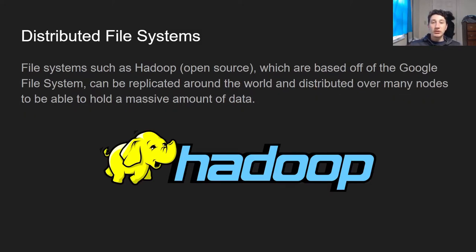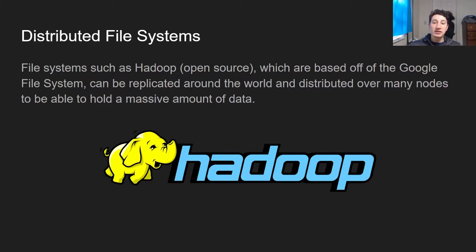So this is where distributed file systems and batch processing come in. A distributed file system is just like a normal file system on your local computer with directories, subdirectories, and files, but running over a bunch of different computers with replication and redundancy. File systems such as Hadoop — the open-source version of the original Google File System — can be replicated around the world for good performance and distributed over a bunch of nodes.